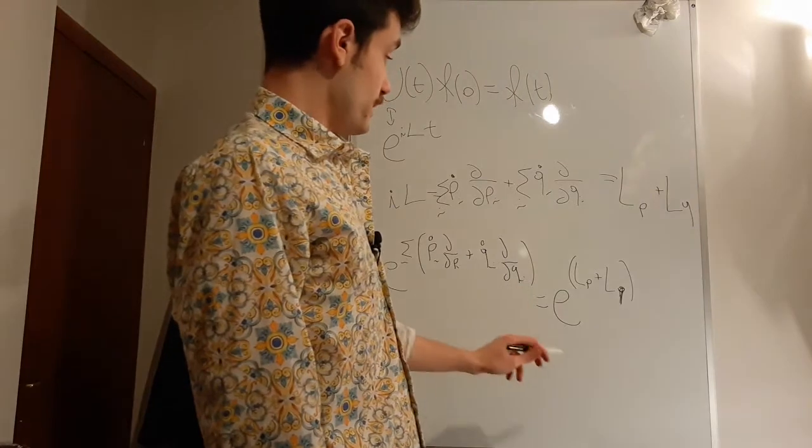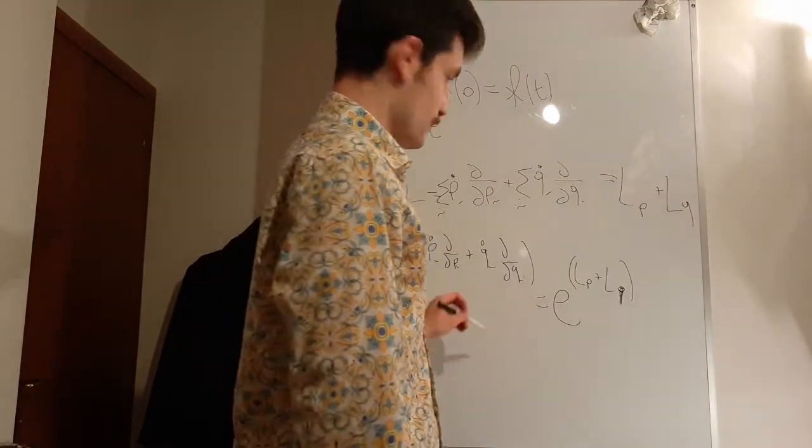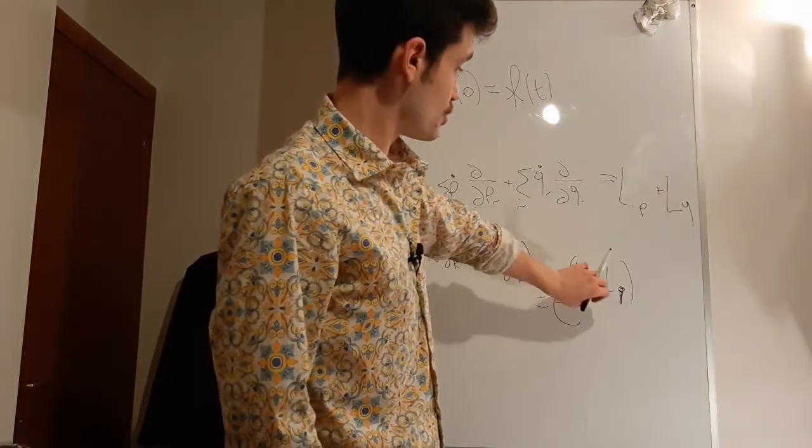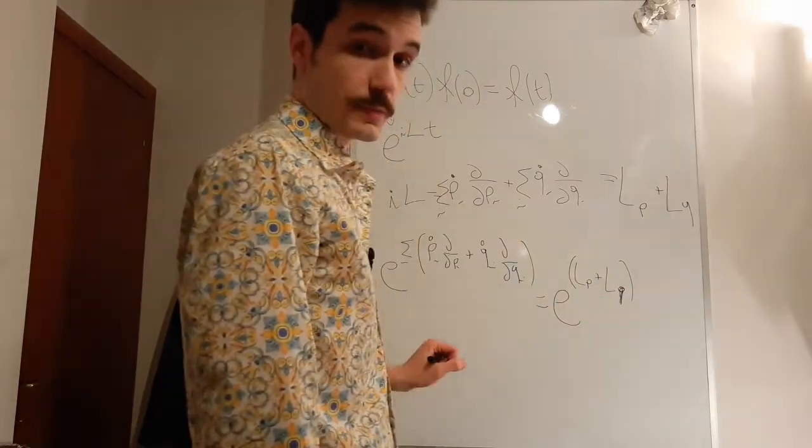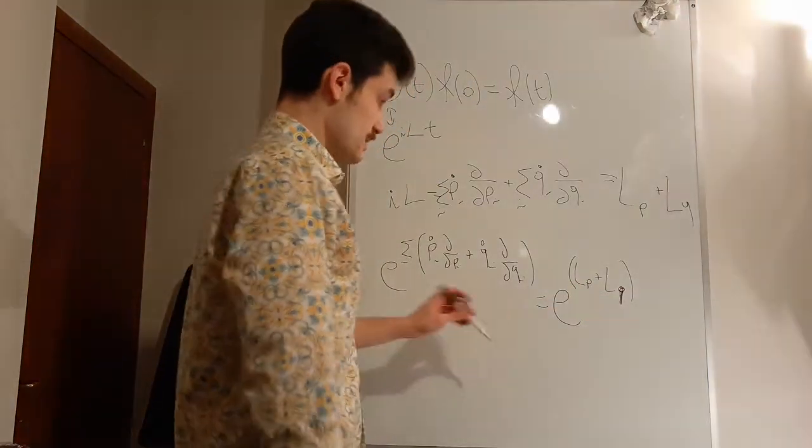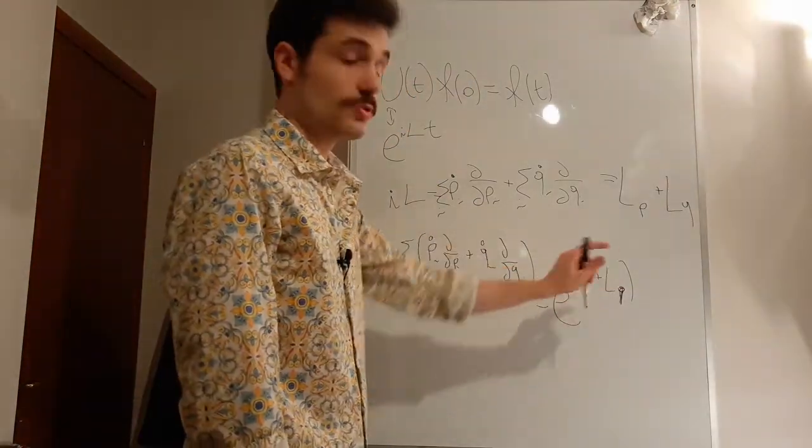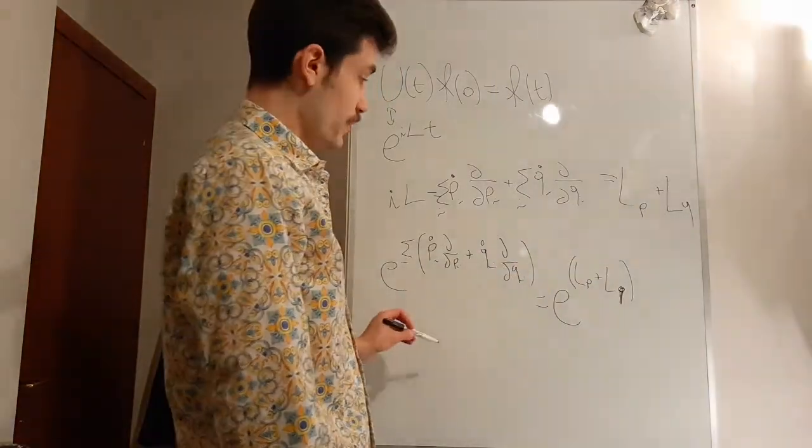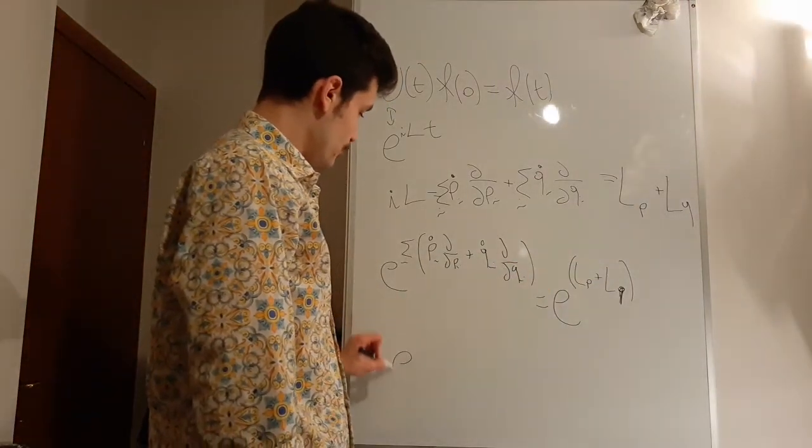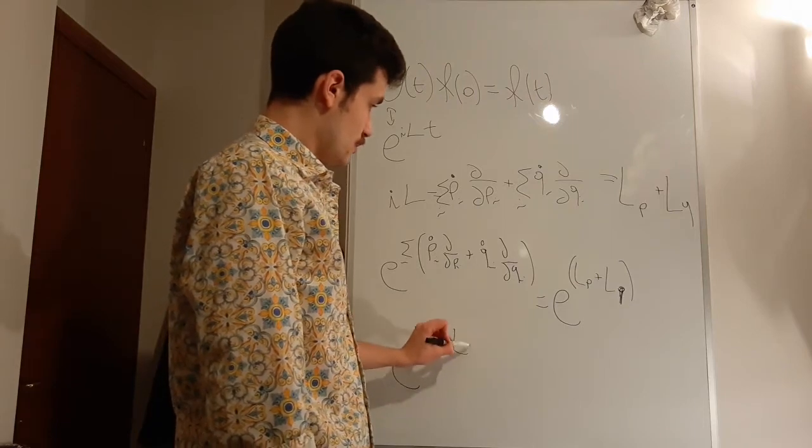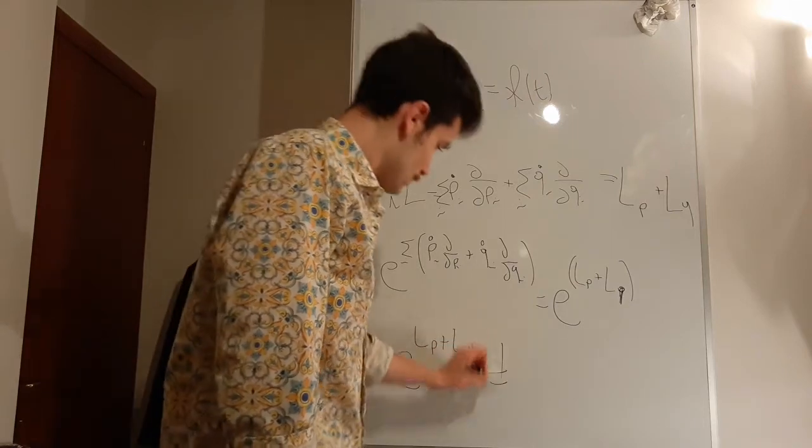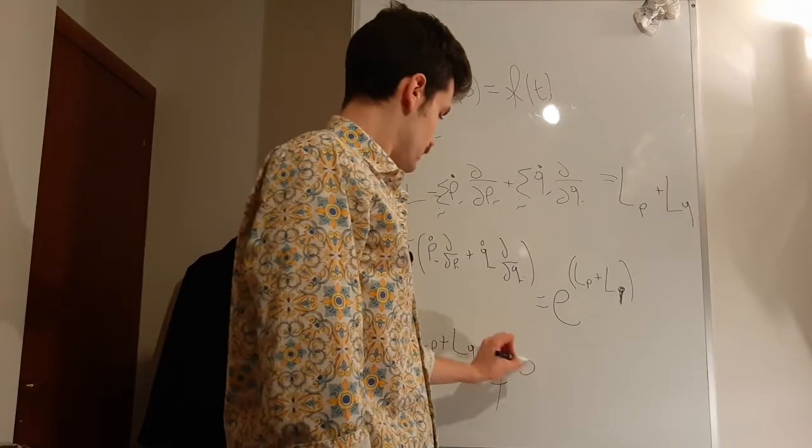It would be nice to split it as we would do usually with an exponential, in two different exponentials. But the problem is that as these two operators do not commute, we cannot do it. So when we have not commuting operators, we cannot split it.